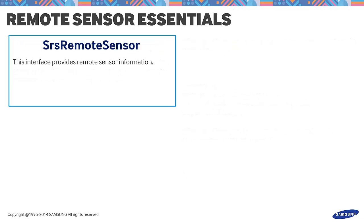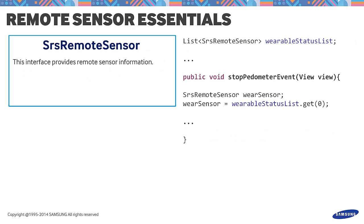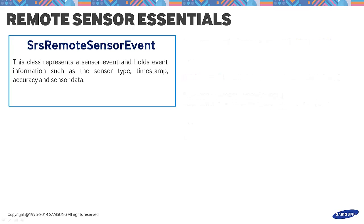The SRS RemoteSensor is an interface that provides remote sensor information. It provides several useful methods such as retrieving the device type or version, getting how much power the sensor is using, inquiring the resolution of the sensor, and the like. The last class is SRS RemoteSensorEvent. This class represents a sensor event and holds event information such as the sensor type, timestamp, accuracy, and sensor data.